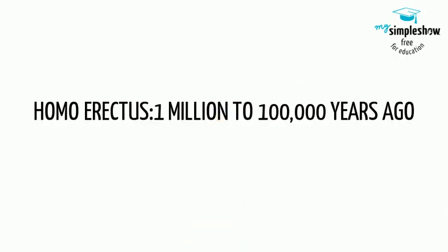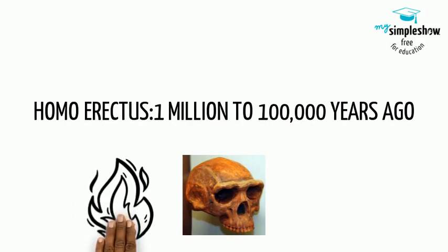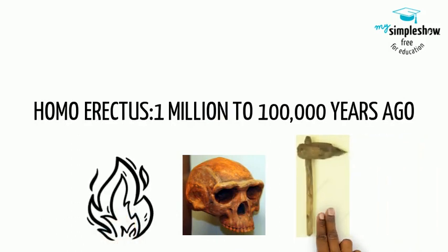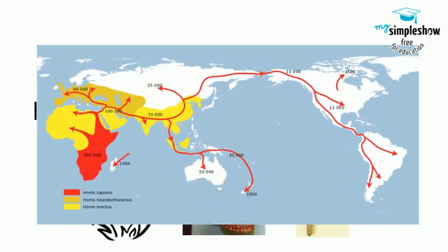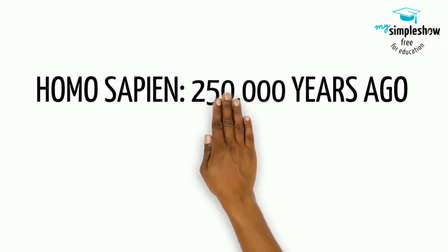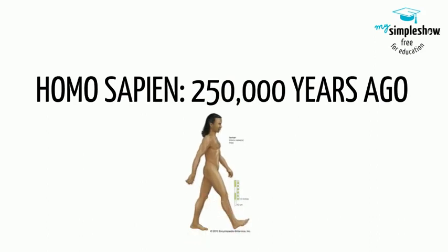Homo erectus, who lived 1.5 million years ago, walked fully upright, discovered fire, created stone axes, and began the migration out of Africa to Europe and Asia. And then about 250,000 years ago, the closest relative to us, Homo sapiens, emerged.